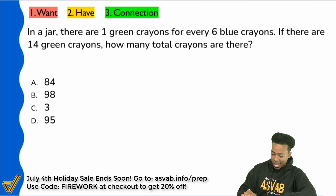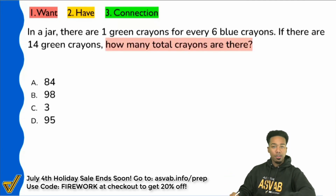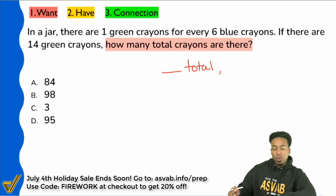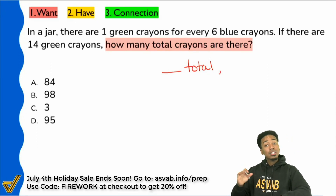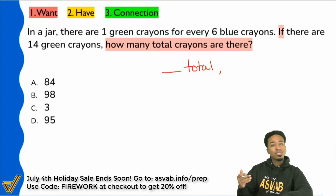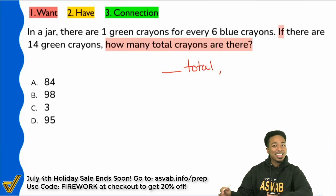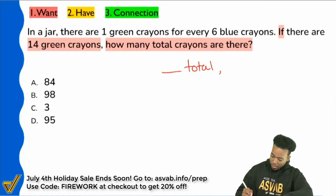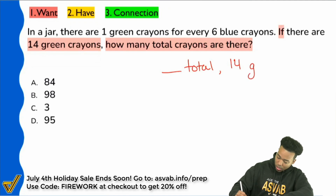First things first, read the question. It says: how many total crayons are there? That's what we're looking for — write that down. We want blank total crayons. One thing I noticed immediately in that same question sentence is the word 'if.' The word 'if' always tells you that the information connected to it is important. So it says: if there are 14 green crayons, how many total? We're looking for total, but we know it's connected to the number of green — 14 green.